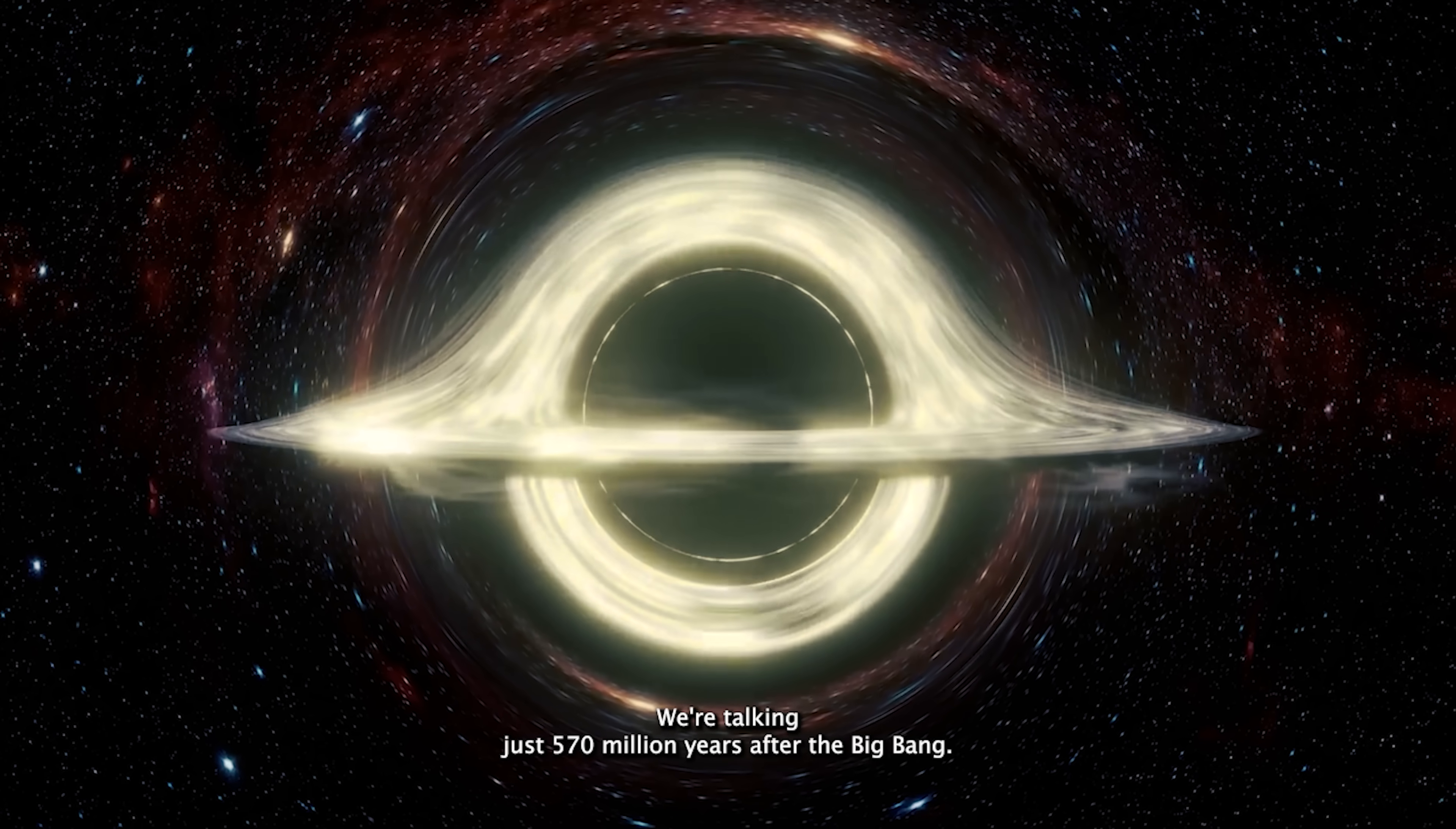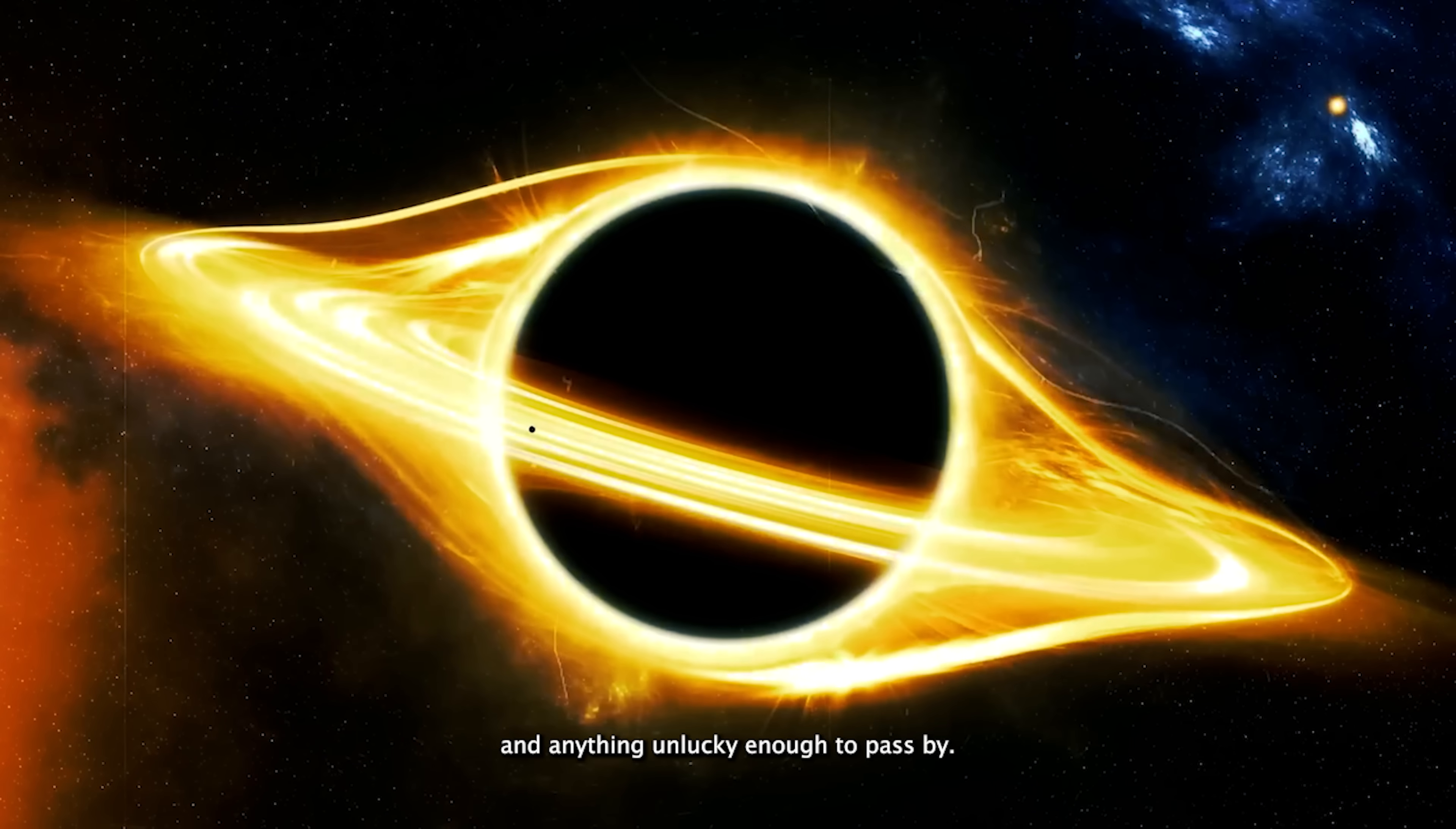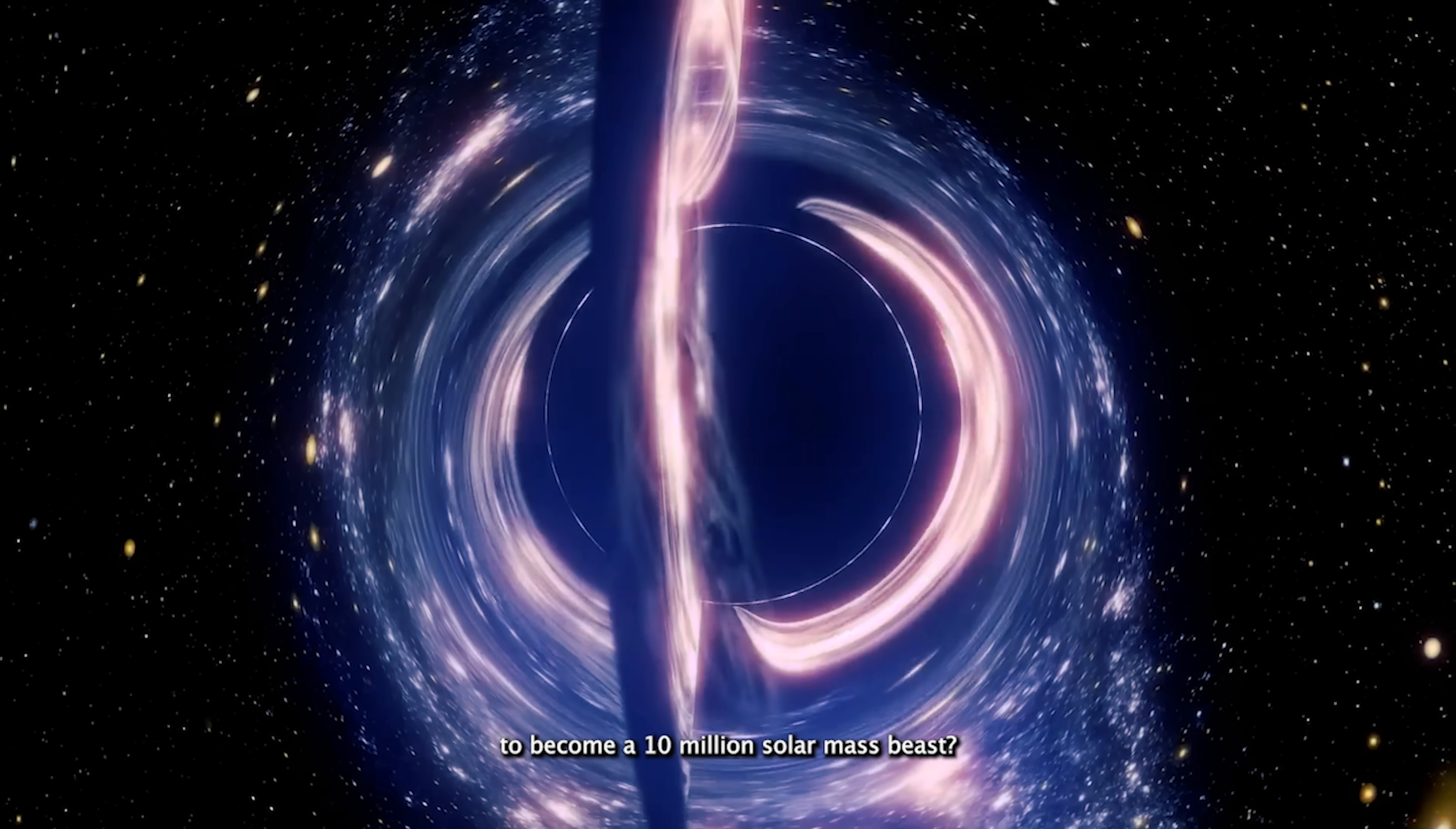We're talking just 570 million years after the Big Bang. That's early. Like baby photo early. According to everything we thought we knew, a black hole of that size should have taken way more time to bulk up. The traditional theory says black holes are born from dying stars, then slowly fatten up by eating gas, dust, and anything unlucky enough to pass by. But wasn't the universe still wiping sleep from its eyes during the so-called dark ages? That's the era right after the Big Bang where everything was dark and kind of empty. So where did this black hole find enough snacks to become a 10 million solar mass beast?